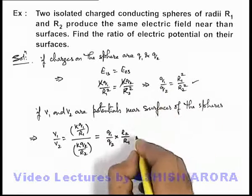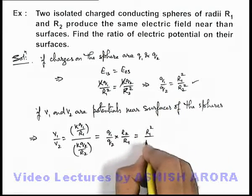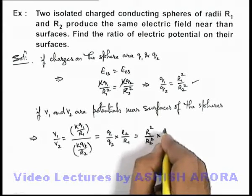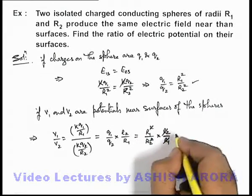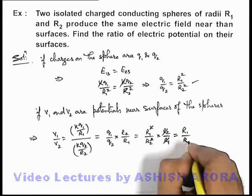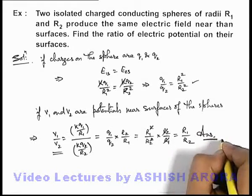Here if we substitute the values of q1 by q2, then it'll be R1 square by R2 square multiplied by R2 by R1. So here this square gets cancelled out and the result we are getting is R1 by R2 which is the ratio of potentials. That will be the answer to this problem.